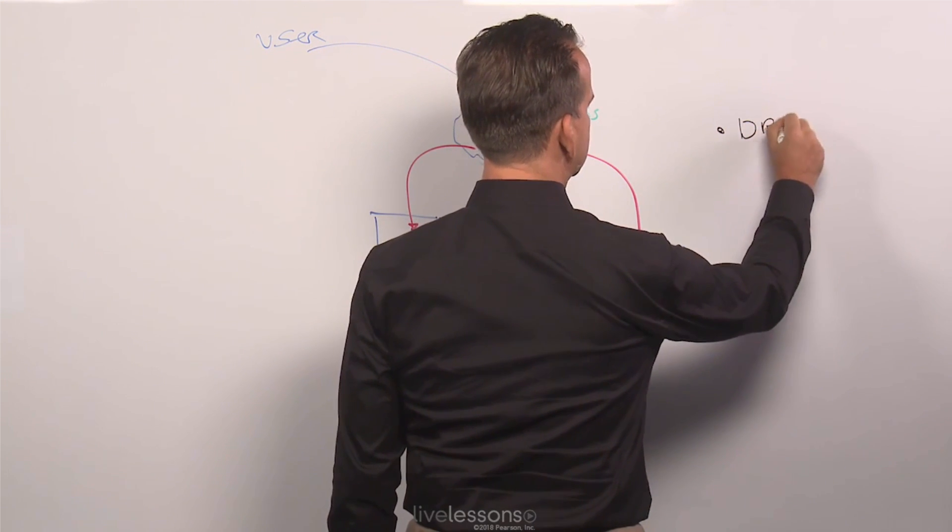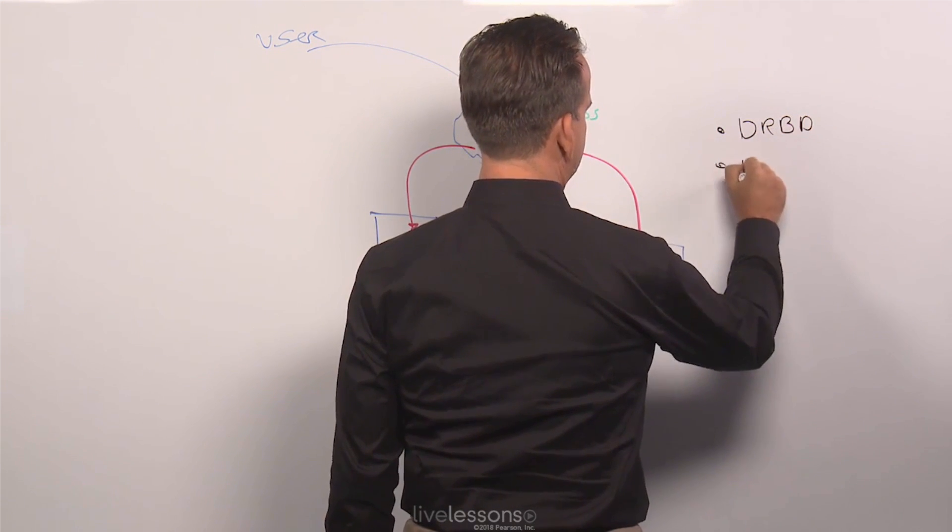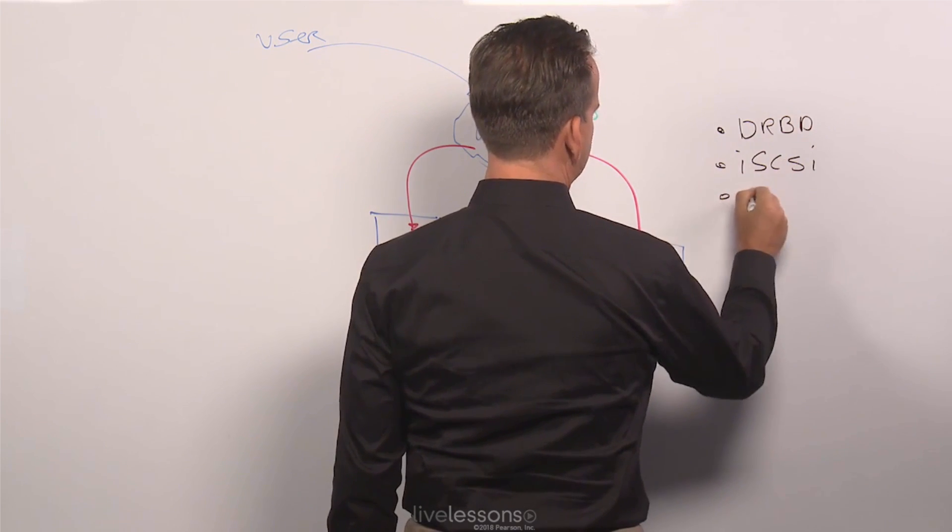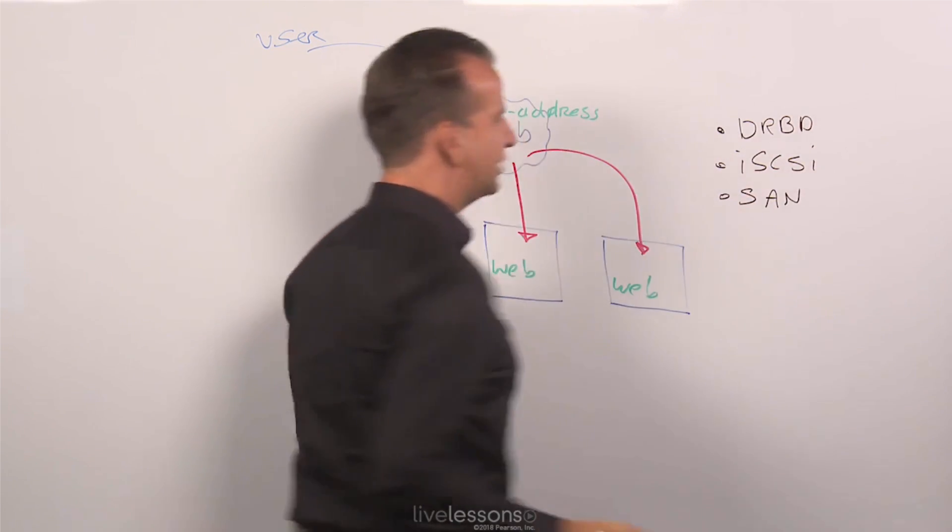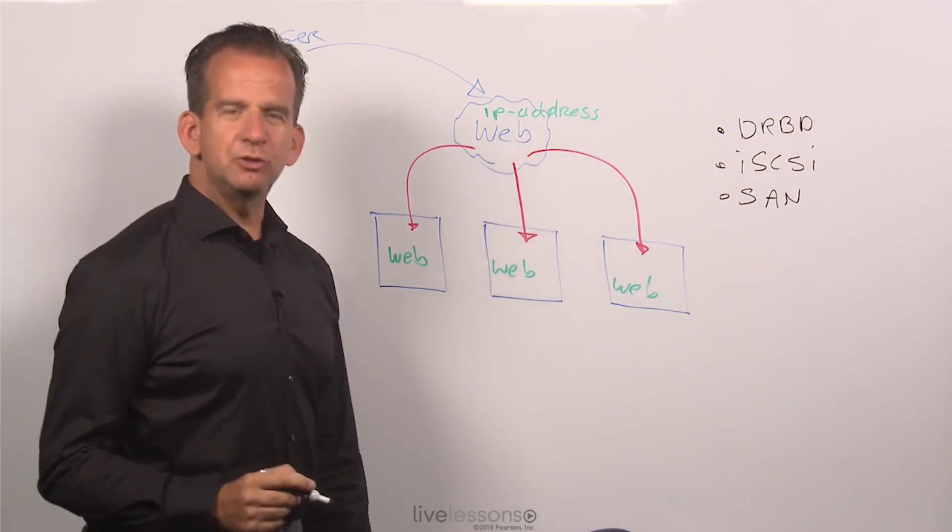There is DRBD, there is iSCSI, and more generically we need to talk about SAN as well. So what is involved?